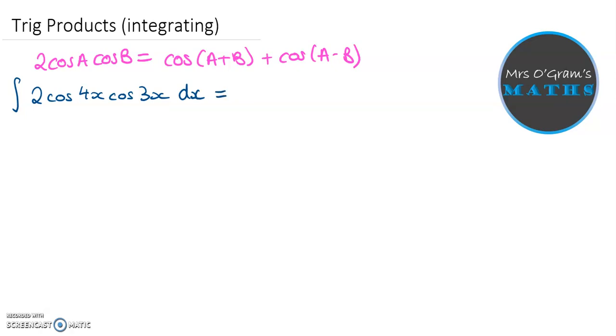So we can now turn this into something equivalent. So 2 cos something cos something becomes, we're still integrating, so it'll be cos of the a part plus the b part, so that's 4x plus 3x, which is 7x, plus cos of the a minus the b part, so 4x minus 3x. So that is simply x.